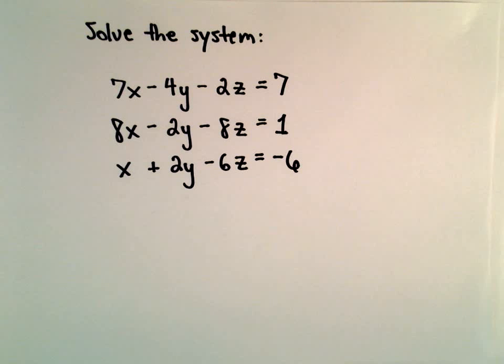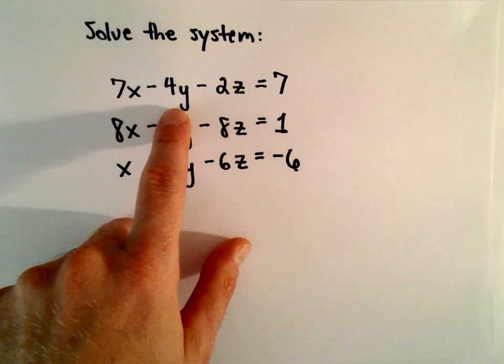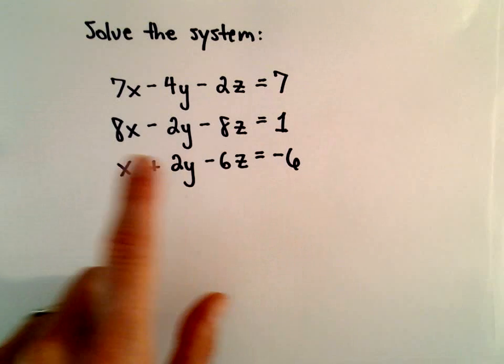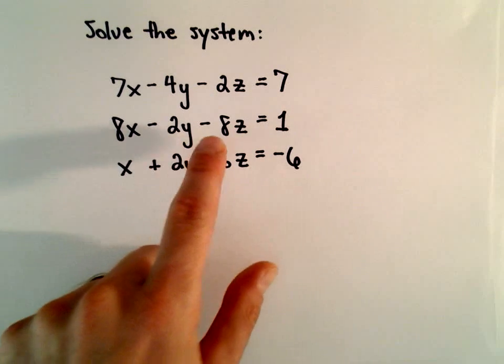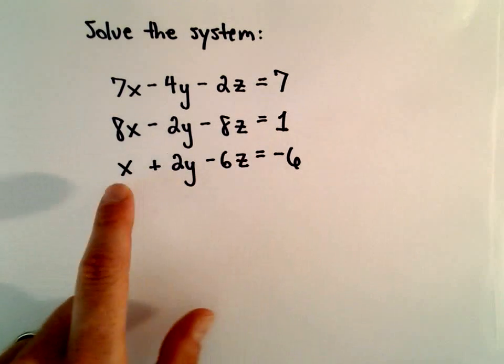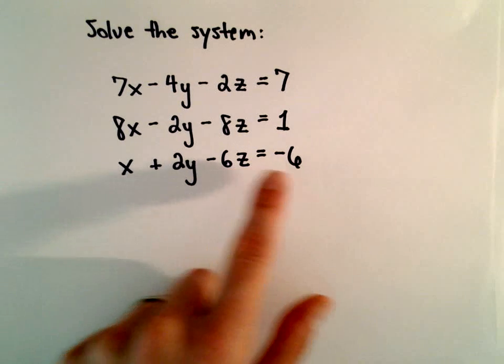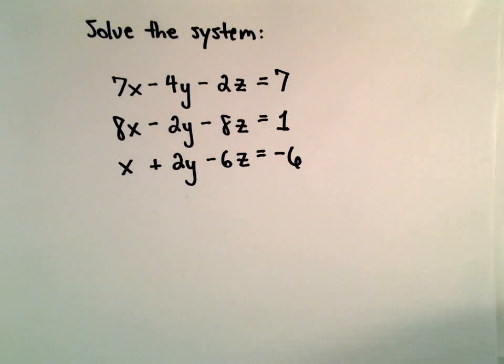Okay, here we're going to solve the system of equations: 7x minus 4y minus 2z equals 7, 8x minus 2y minus 8z equals 1, and x plus 2y minus 6z equals negative 6.